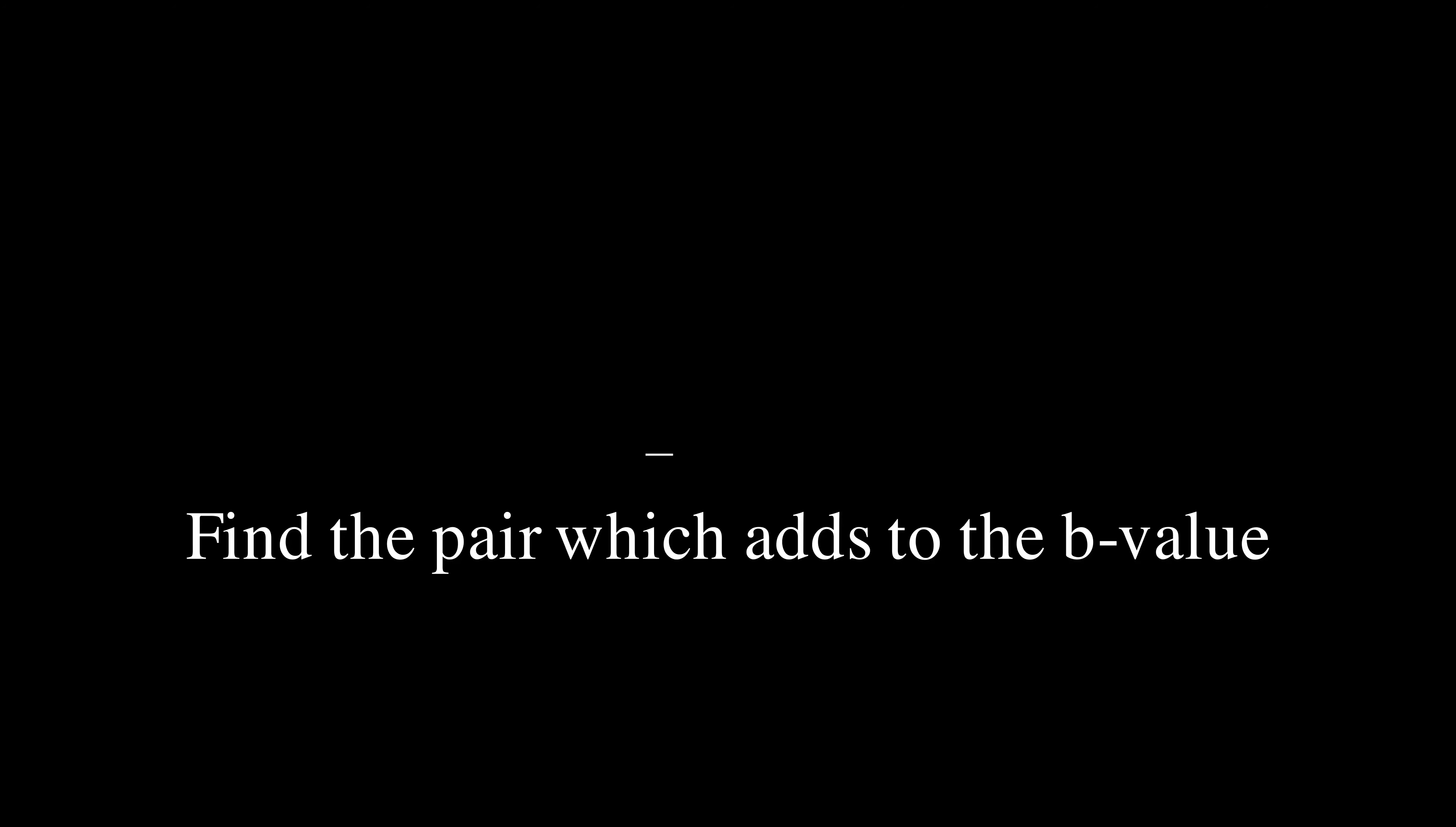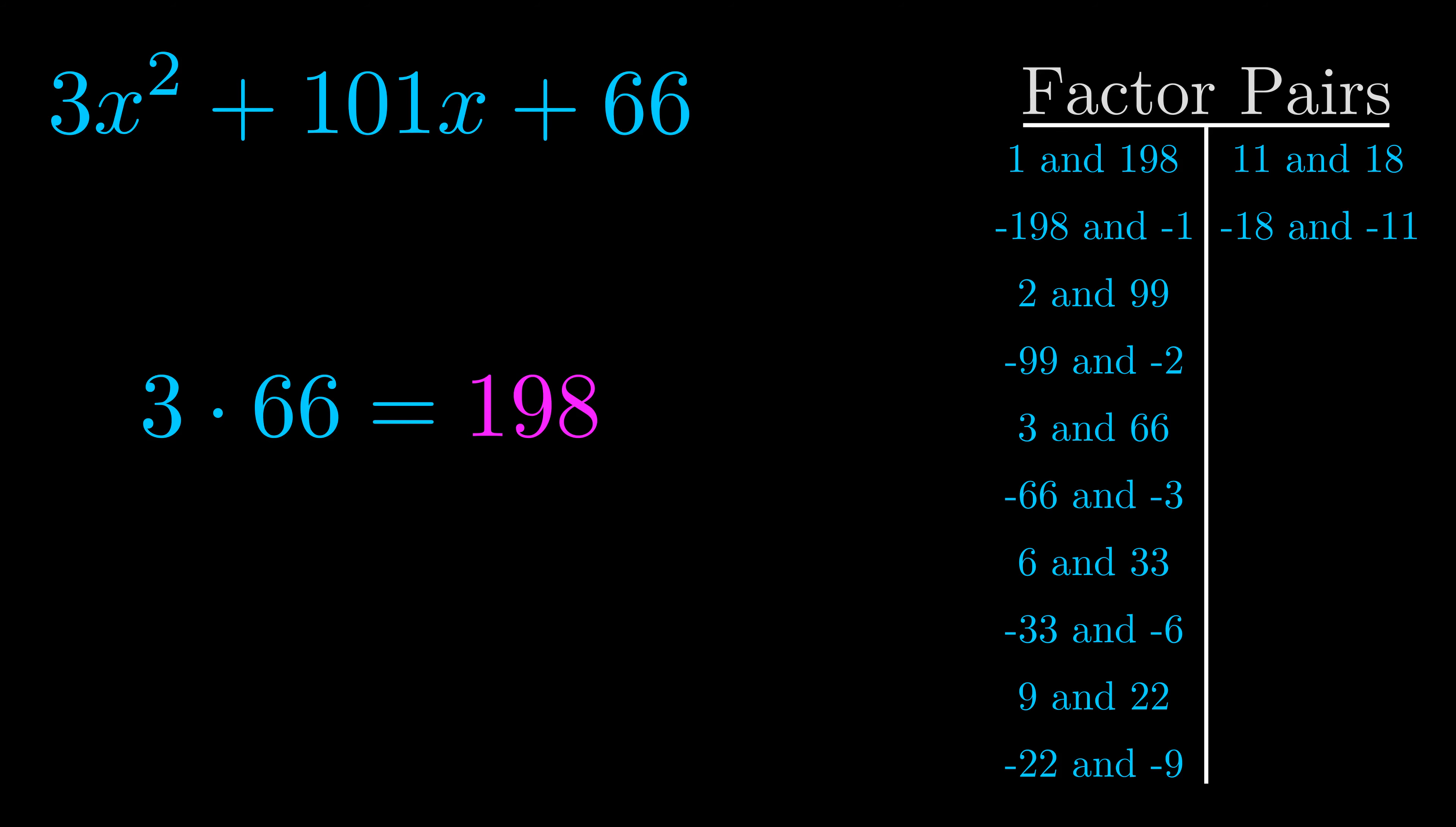The b value is the coefficient on the x term. That's the middle term, the one that we haven't done anything with yet. And really this is the only factor pair that we need.